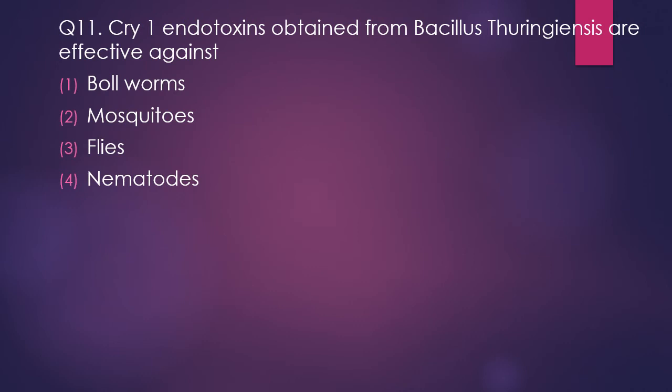Question 11. Cry1 endotoxins produced by Bacillus thuringiensis are effective against: bollworm, mosquitoes, flies, or nematodes. The correct answer is option 1 — they are effective against bollworms and are used in the production of resistant cotton.